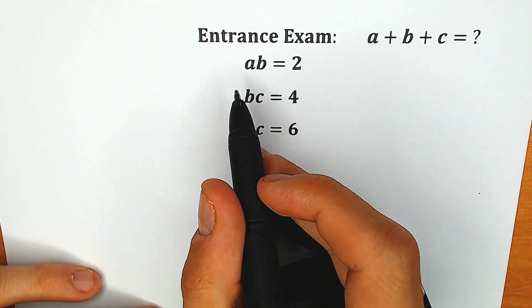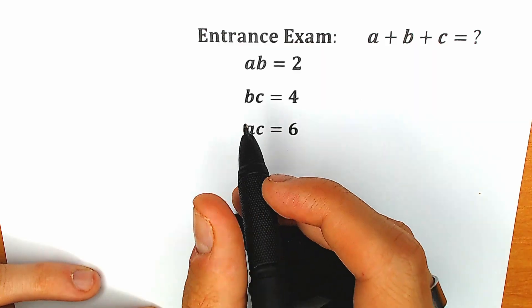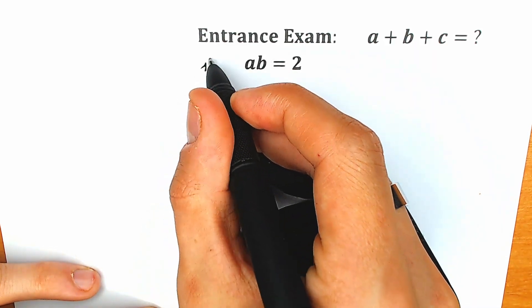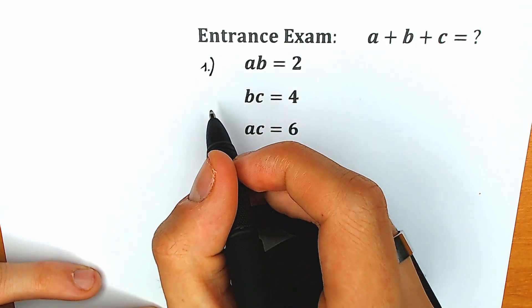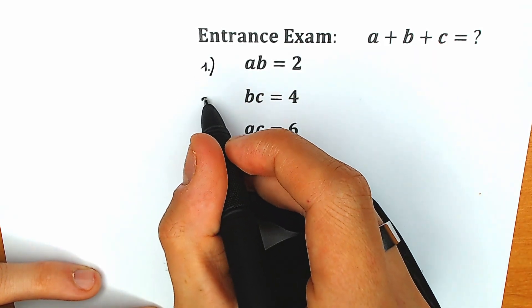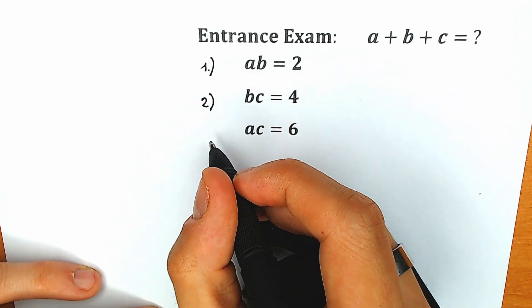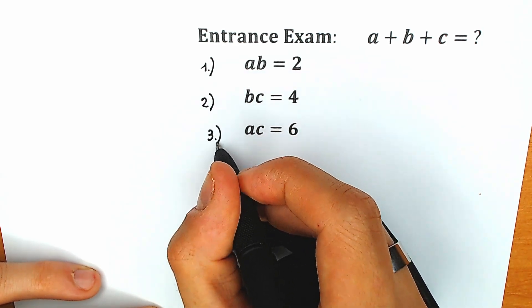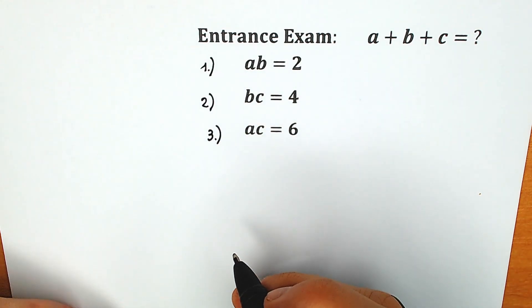First of all, let's label our equations. This first equation: a times b equals 2 — I'll call this the first equation. b times c equals 4 — this is the second equation. And a times c equals 6 — this is our third equation. So we have three equations.